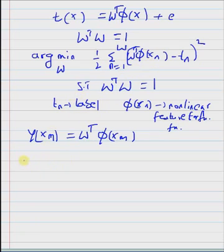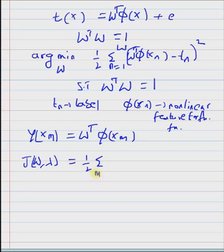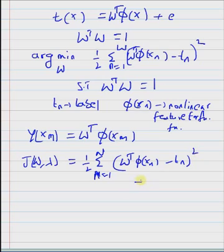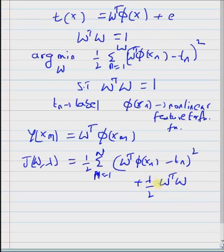In order to do that, we write the dual form of the cost function, that is J of w comma lambda, where lambda is the Lagrange multiplier. The first term is the sum of the square errors: summation n equal to 1 to N of (w transpose phi of xn minus tn) whole square, plus lambda by 2 times w transpose w. This is the constraint part of the Lagrange form of the optimization function.